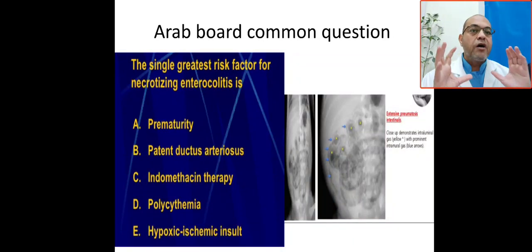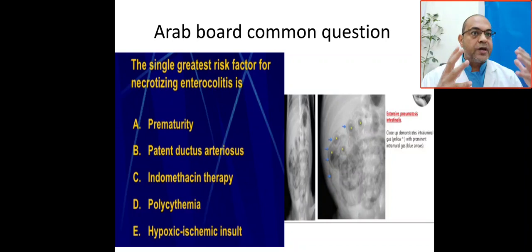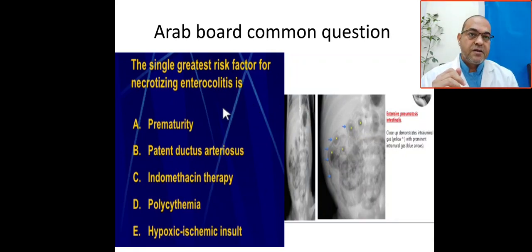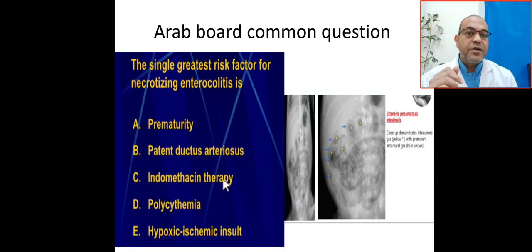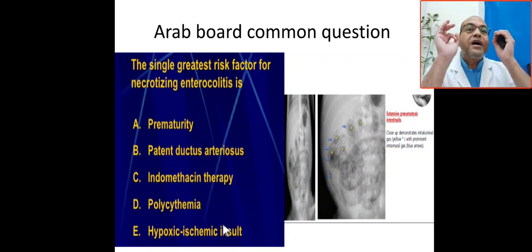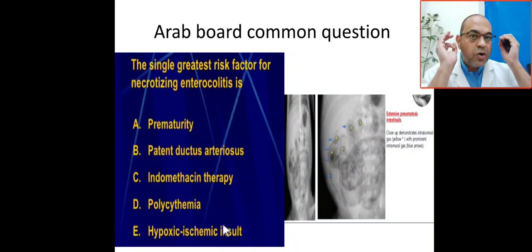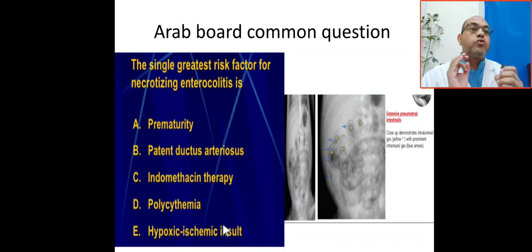This is one of the Arab Board common questions, also the Saudi Board and the Egyptian Board. The question asks: what is the single greatest risk factor for necrotizing enterocolitis? Options include prematurity, patent ductus arteriosus (PDA), indomethacin therapy, polycythemia, and hypoxic-ischemic insult.